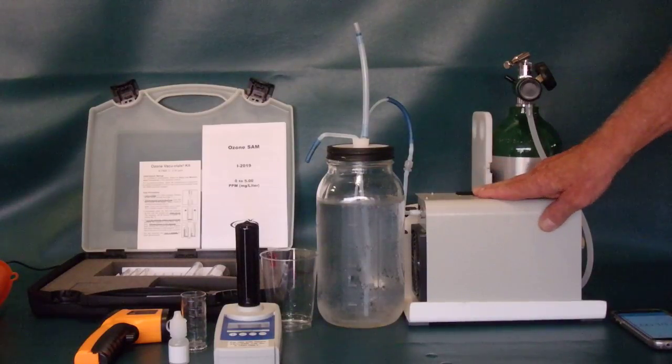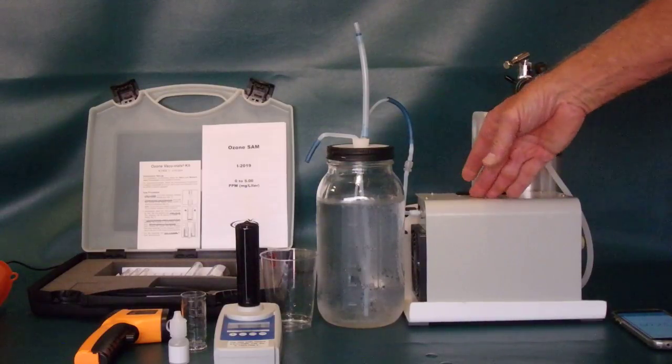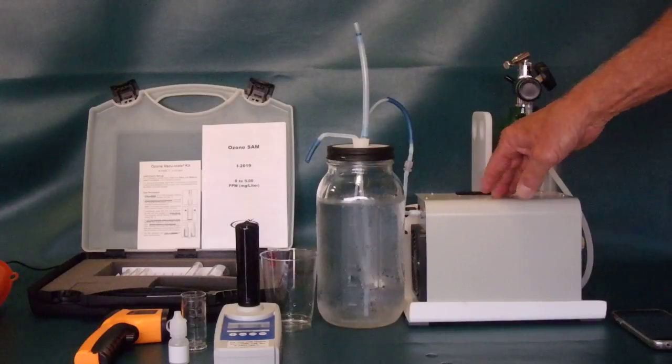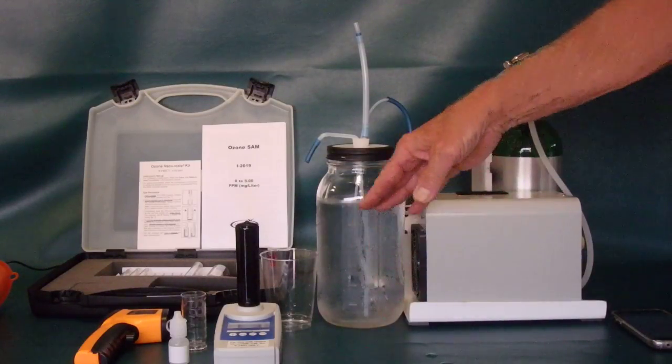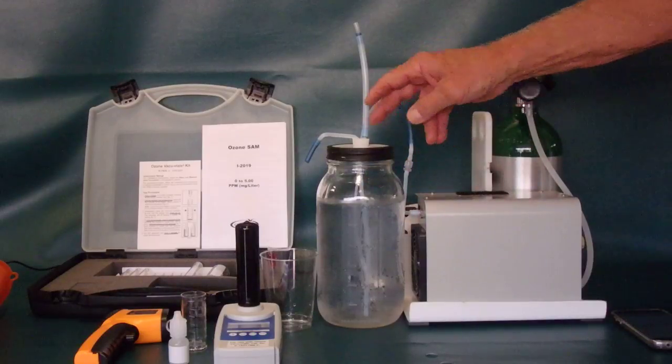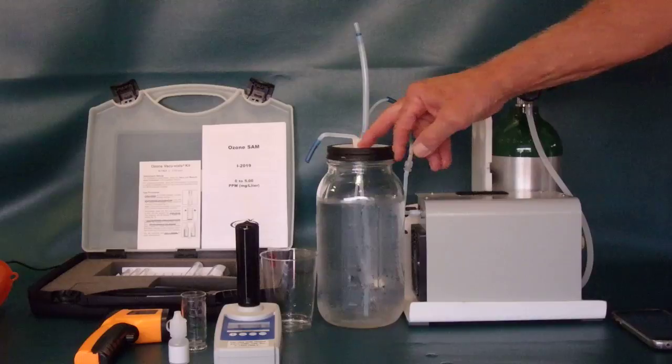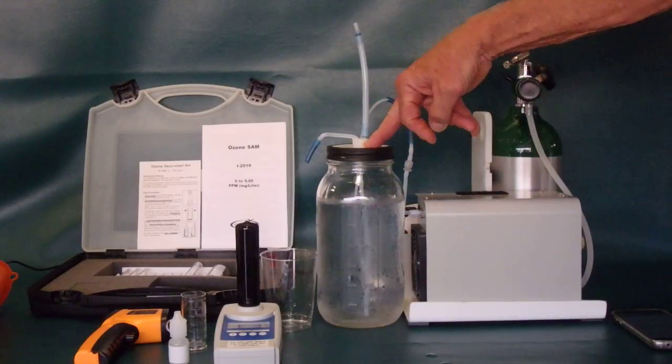So again, we're using the NLE KNT 24. You can use the NLE 1000. Both of them are very similar. This is a little less output than the 1000. But you'll see this is more than adequate for whatever your needs might be. All glass. And the glass diffuser except for Teflon tubing, Teflon lid.